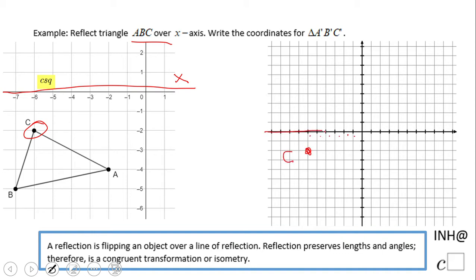This is the line of reflection. How are we going to do that? We're going to count one, two... one, two. This is what point C is going to be after reflection. This is point C prime.